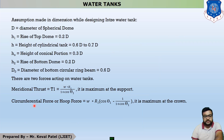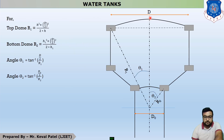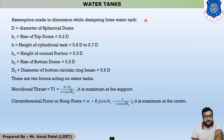The second force is the hoop force, also called the circumferential force, denoted by T2. The equation of T2 is W times R1 times the quantity cos theta1 minus 1 upon 1 plus cos theta1. This circumferential force is maximum at the crown — that is, at the topmost center point of the dome.